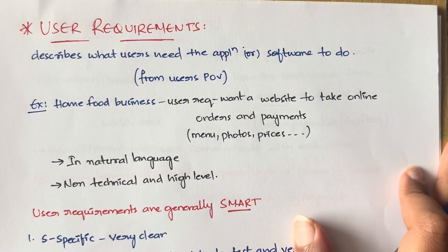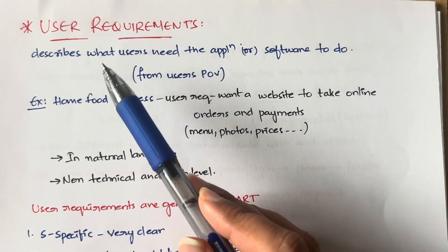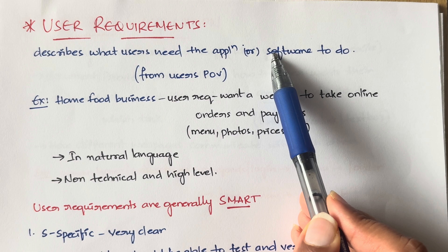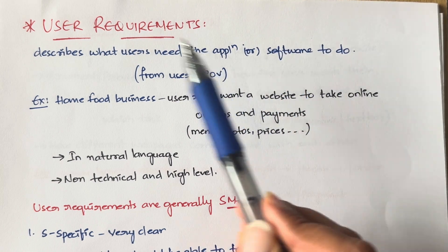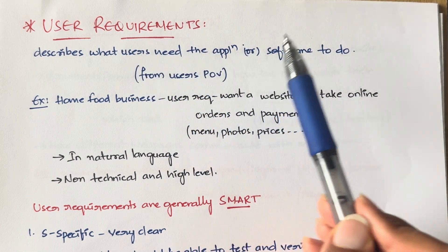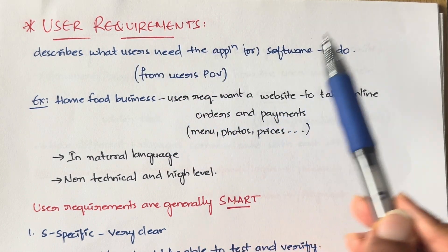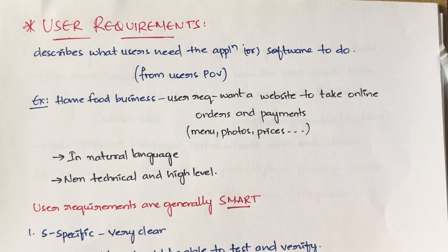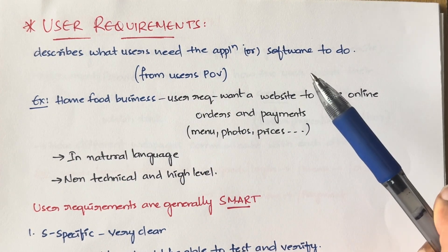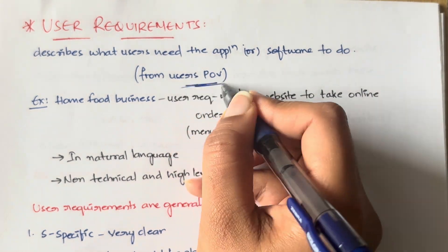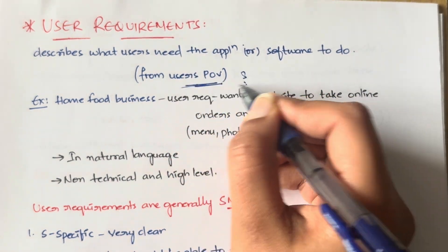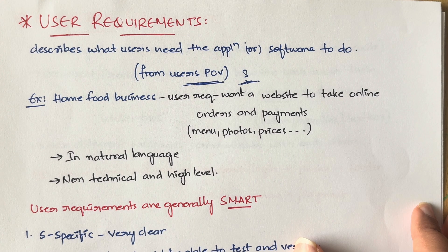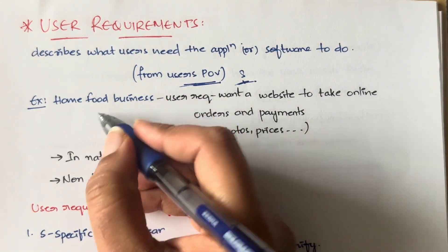User requirements are the requirements which describe what the users need from the application or software we are going to develop — what it has to do, what is the purpose of that application or software. So from the user's point of view, what a user wants are the user requirements.